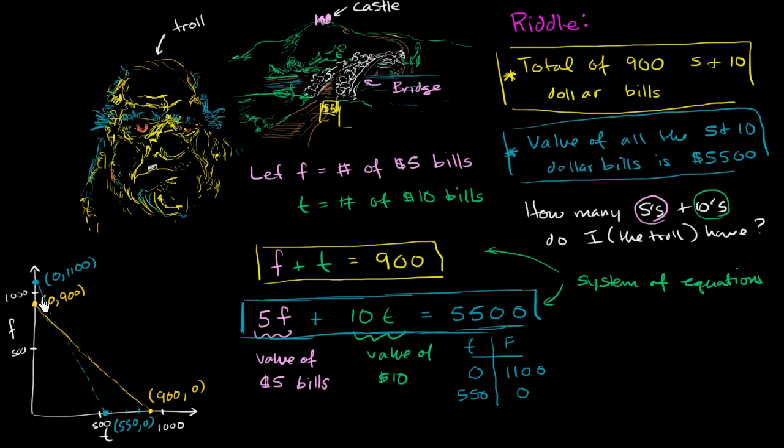Every point on this blue line represents an f, t combination that satisfies the second constraint. So what is an f and t, or number of fives and number of tens, that satisfy both constraints? Well, it would be a point that is sitting on both of the lines. And what is a point that is sitting on both of the lines? Well, that's where they intersect. This point right over here is clearly on the blue line, and it is clearly on the yellow line.